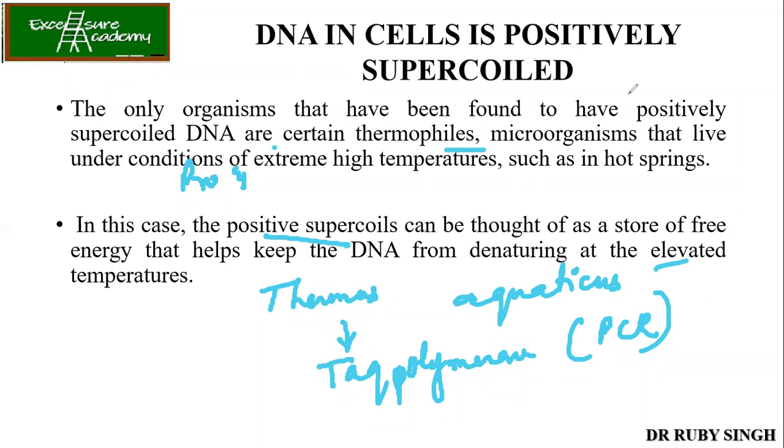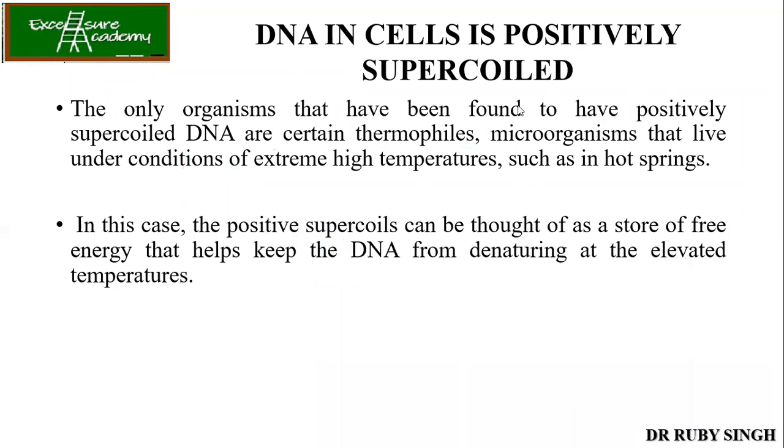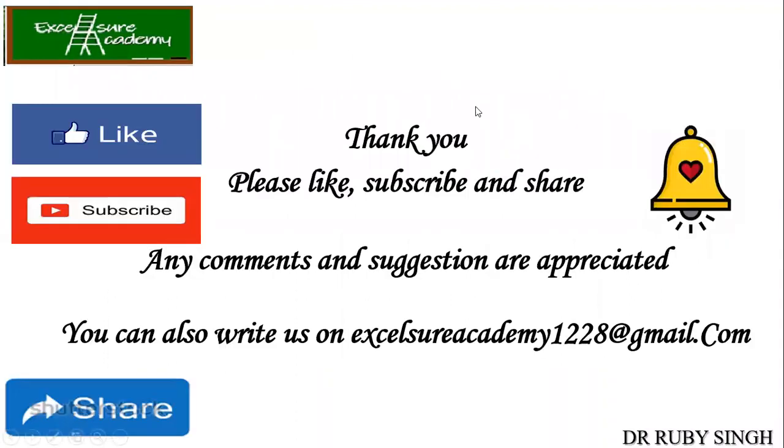The only organisms found to have positively supercoiled DNA are certain extreme thermophiles — organisms living in extreme high-temperature conditions like hot springs. A classic example is Thermus aquaticus, from which we purify Taq polymerase used in PCR. In these bacteria, positive supercoiling is thought to act as a store of free energy that helps prevent DNA from denaturing at elevated temperatures. That's all for today — thank you.